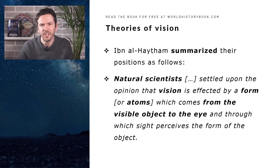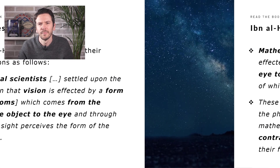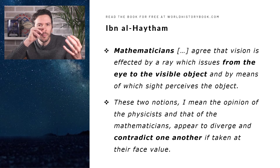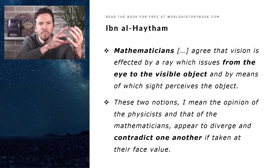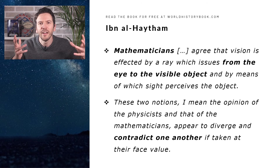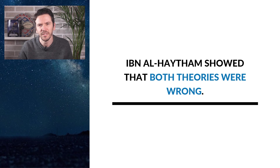Al-Haytham summarized their positions as follows: "The natural scientists settled upon the opinion that vision is affected by a form or atoms which come from visual objects to the eye, and through which sight perceives the form of the object. Mathematicians, in contrast, agree that vision is affected by a ray which issues from the eye to the visual object, and by means of which sight perceives the object." These notions, he continued, appear to diverge and contradict one another. So they cannot both be right. And in fact, Ibn al-Haytham showed that both theories were wrong.